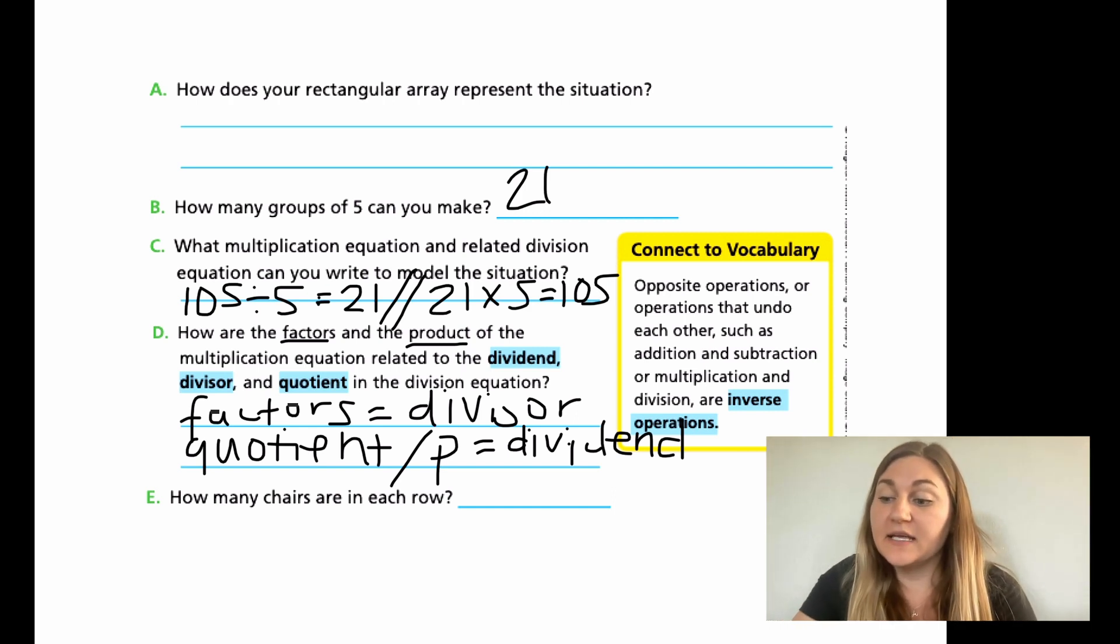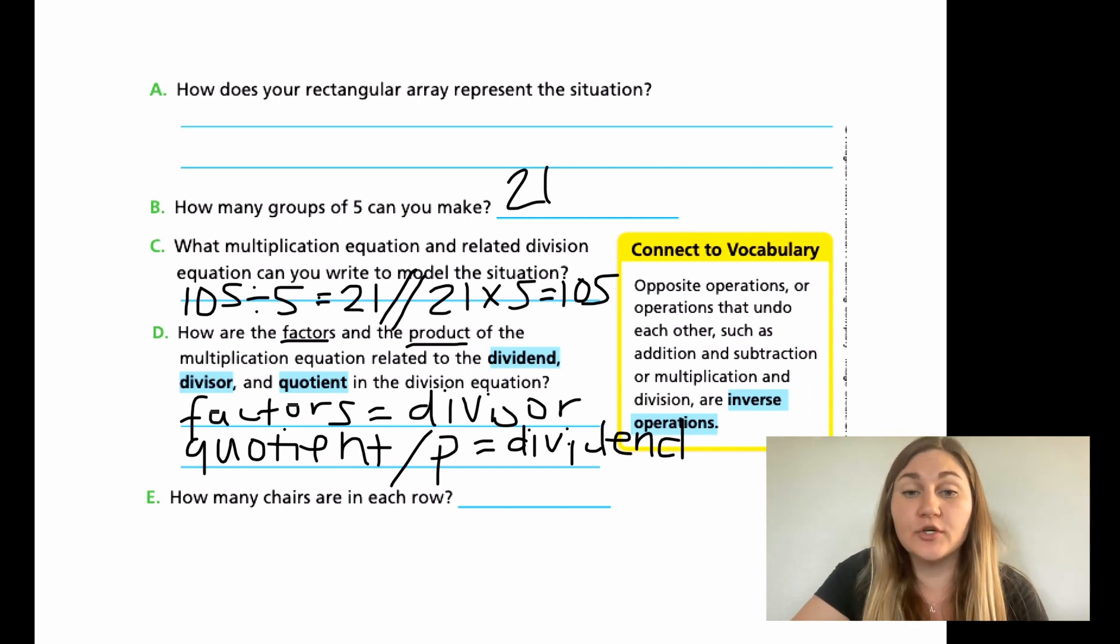And so then again, how many chairs are in each row? This is the same question asking in a different way for B. How many groups did you make? Meaning how many chairs are in each row? And we did get 21 chairs in each row. All right. I want you to go ahead and finish this lesson. Obviously do your check for understanding. And then I will see you for module two, lesson two. Thank you.